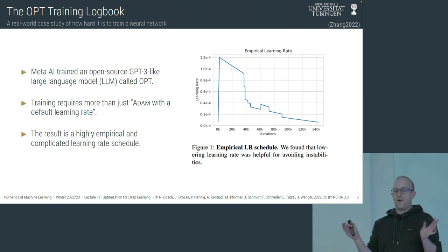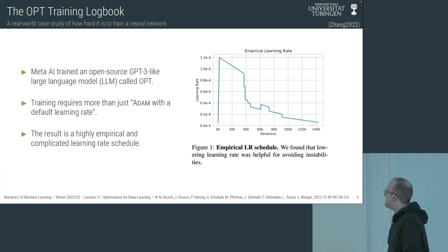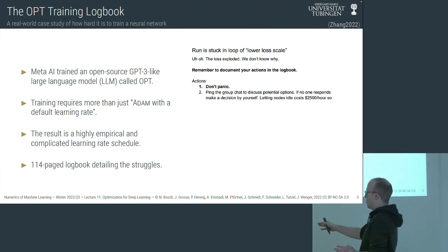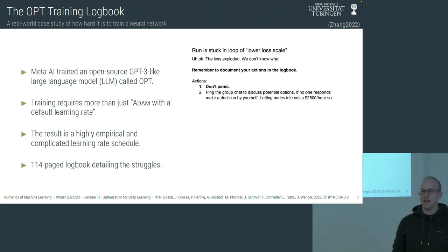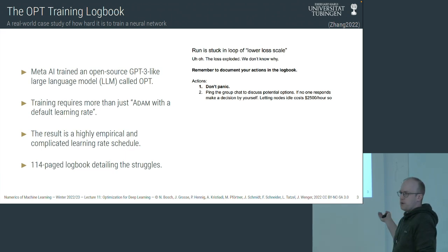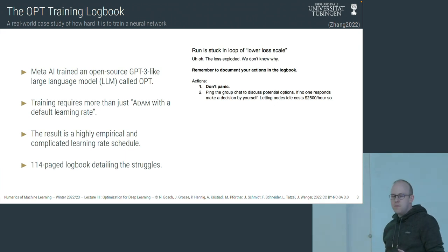This wasn't because Meta didn't know there's a default learning rate — this was actually what was needed to get these large language models to train. Luckily for us, they detailed all their struggles in a logbook with more than 100 pages, dedicated to what they tried, what they observed, and what they did as a result. There's an entire section just about 'the loss exploded and we don't know why,' and the first suggestion is: step one, don't panic.